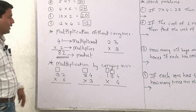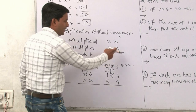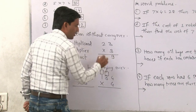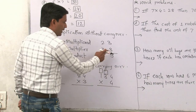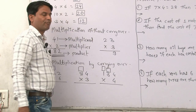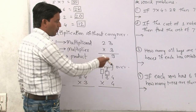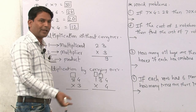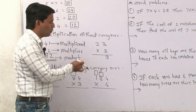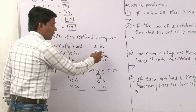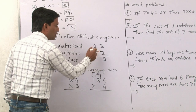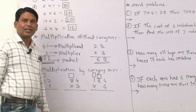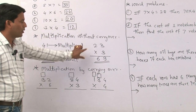In the second one, we multiply 23 by 3. First of all, the digit at the ones place is multiplied: 3 threes are 9. Then the digit at the tens place is multiplied: 3 twos are 6. So 69 is the product of this multiplication.